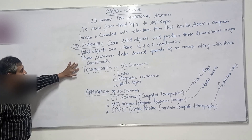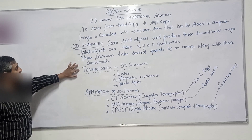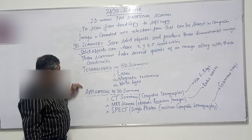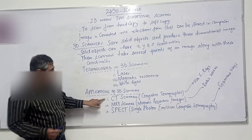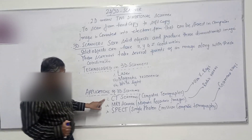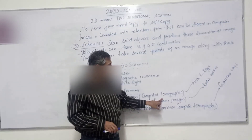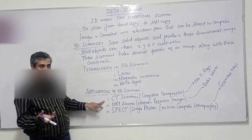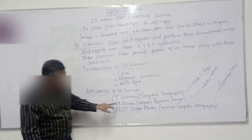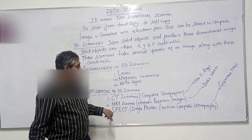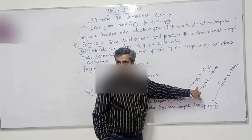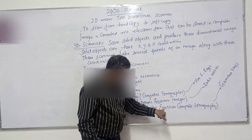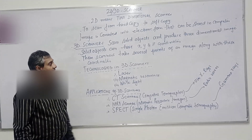Technologies used in the 3D scanner include laser technologies, magnetic resonance, and white light. In terms of applications, CT scan — which stands for Computed Tomographic — uses X-rays at the back end. We also have MRI, which stands for Magnetic Resonance Imaging; these are terms used in medical scanning and use radio frequency or radio waves at the back end. The last one is SPECT — Single Photon Emission Computed Tomography — which uses gamma rays.